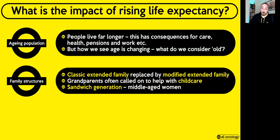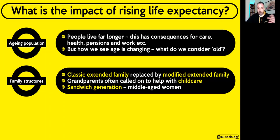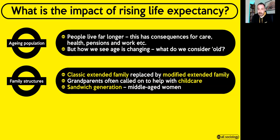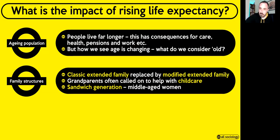Family structures have also changed. If people are living longer, we might expect to see more people living in extended families — where you live with anyone other than your immediate generation, like grandparents, aunties, uncles. But what happens now is that rather than living with older relatives, we might live a bit further away but keep in touch much more often through mobile phones, texts, or Zoom. We've had a change from the classic extended family where you all live together, to what we now call a modified extended family — where you don't have to live with older relatives but stay in touch just as frequently.